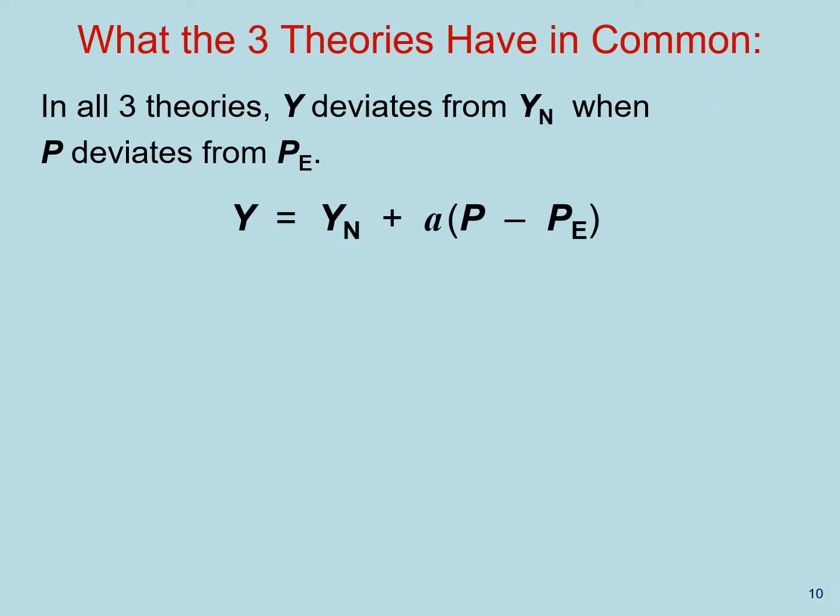To formalize this intuition, let's put it into an equation. So first, we have output, short run output Y, and that is a function of the natural rate of output, naturally.